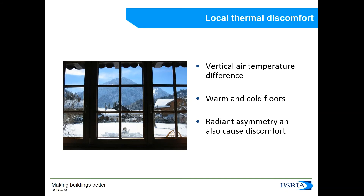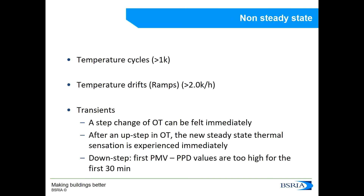On radiant asymmetry, which can also cause discomfort, people are most sensitive to radiant asymmetry caused by four aspects: warm ceilings, cold ceilings, cool walls, or warm walls. The standard establishes formulas to calculate a predicted percentage of dissatisfied based on these factors of local discomfort.